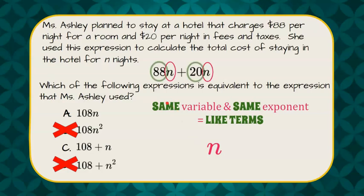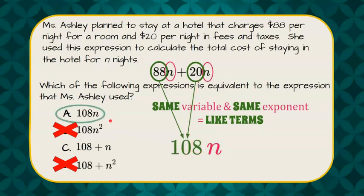Then we go ahead and look at our coefficients, which are 88 and 20, and we can add those together, which is 108, giving us 108N. So our answer choice is A.